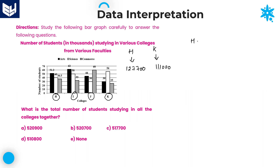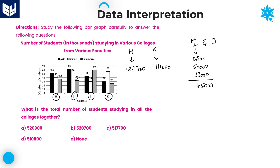For college I: arts is 62,000, science is 50,000, and commerce is 33,000. Adding all three — three zeros are common; 2+3=5, 6+5=11, 11+3=14 — so college I total is 1,45,000.